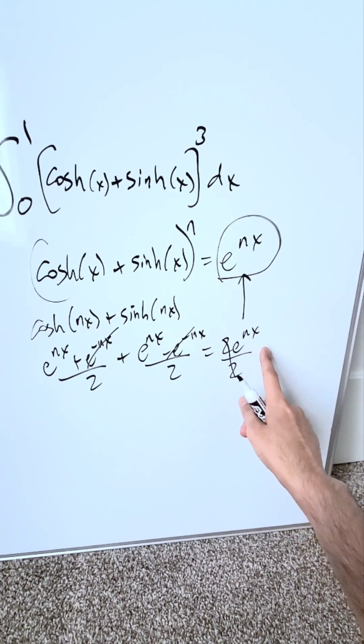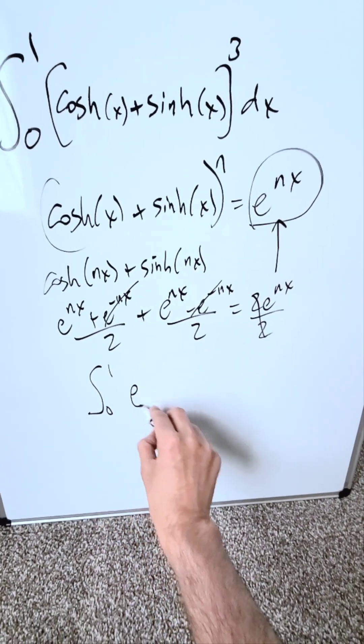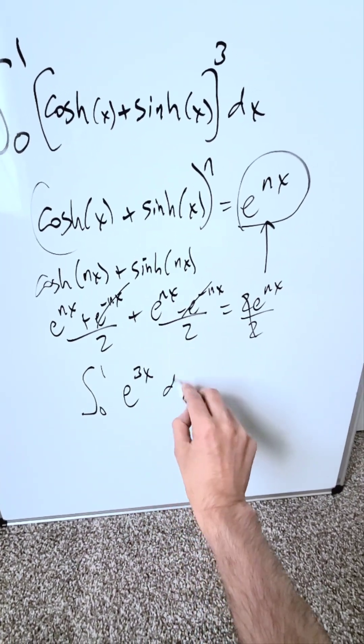I'm seeing here an n value of 3, which means in essence my integral simplifies to e to the power of 3x dx.